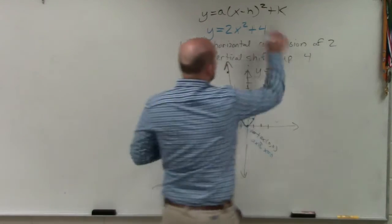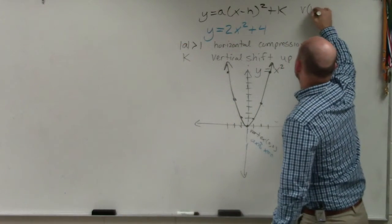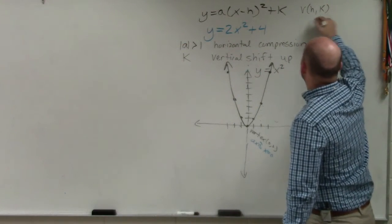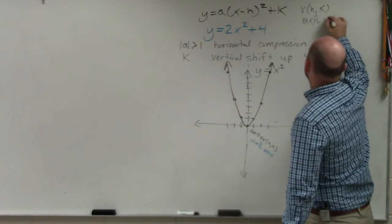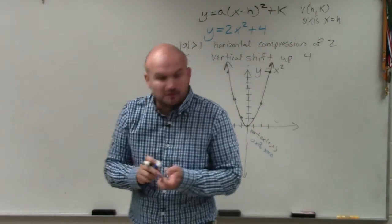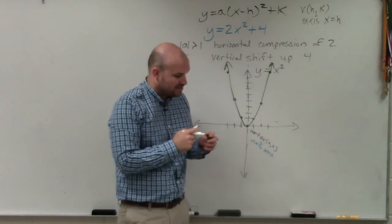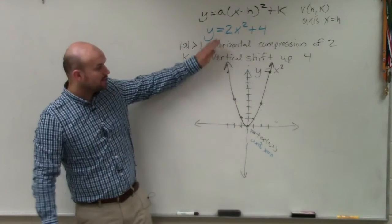Now, remember in our parent graph, the reason why we use this is because the vertex is (h,k), and the axis is x equals h. So when you're graphing a new graph, those are the first two pieces of information that I want you to find.